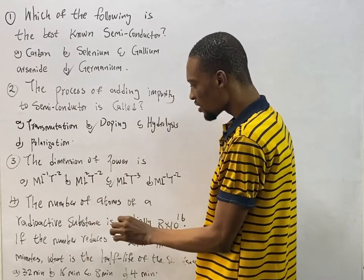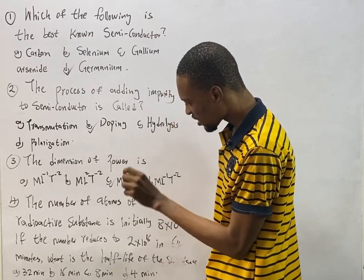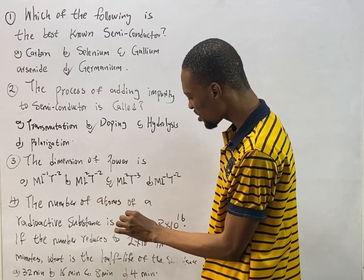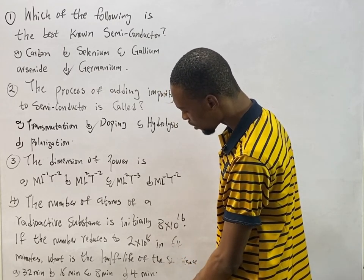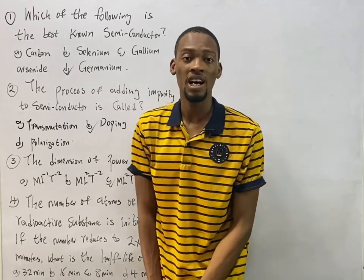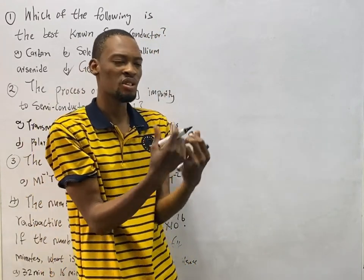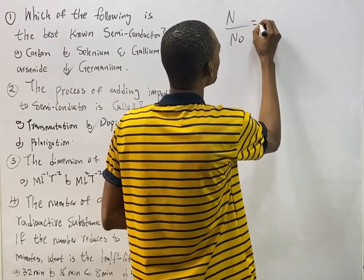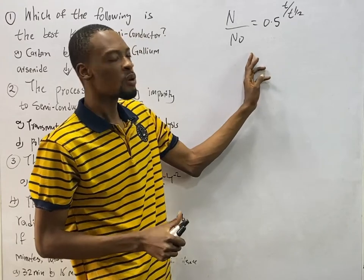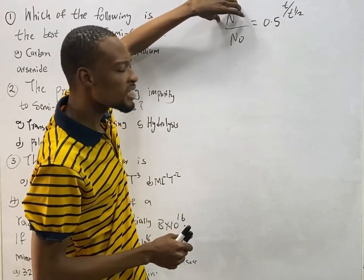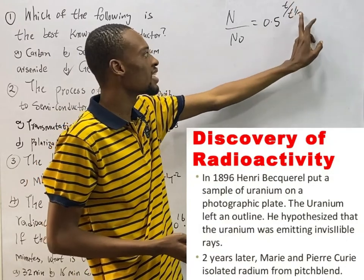Question 4: The number of atoms of a radioactive substance is initially 8 × 10¹⁶. If the number reduces to 2 × 10¹⁶ in 64 minutes, what is the half-life? The formula for half-life is N/N₀ = (0.5)^(t/t½), where N is the remaining mass, N₀ is the initial mass, t is the elapsed time, and t½ is the half-life.